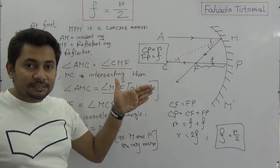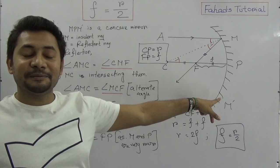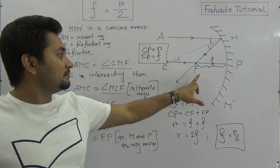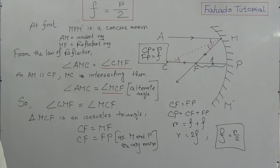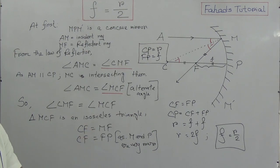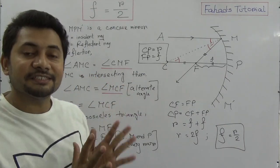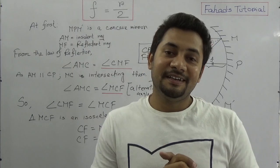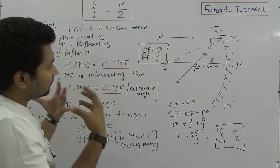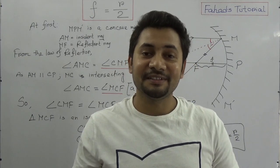So this is how we prove that F is equal to R by 2. C is the center of curvature, P is the pole of the concave mirror, CP is the radius of curvature which is R, and FP is the focal distance which is f. I hope you understand. If you have any questions or recommendations please let me know in the comments. Take care, stay well, see you in the next class. Bye.